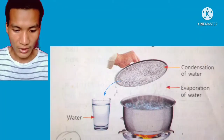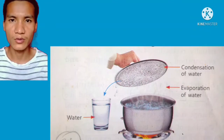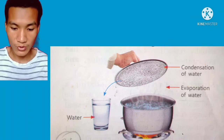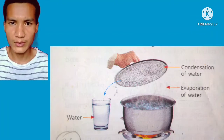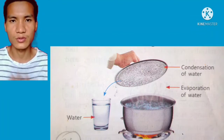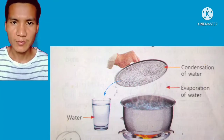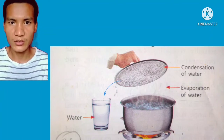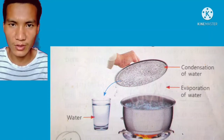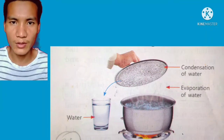Now we'll talk about condensation. Condensation is a process in which a gas changes into a liquid. When you boil water, gas is produced from that water. If you take that gas and store it in a cool place for a few minutes, it will again turn back into water.